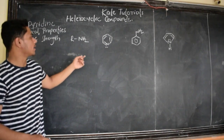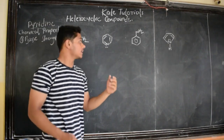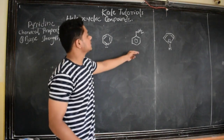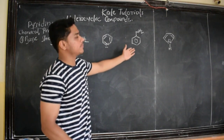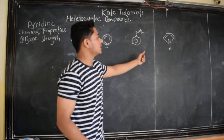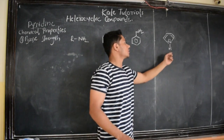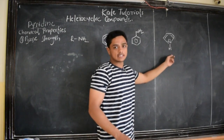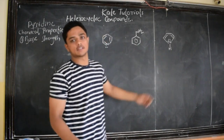Here we have four compounds. This first one is an amine — a primary amine. This second one is pyridine. This third one is aniline — also a primary amine but aromatic. And this last one is pyrrole, which we have discussed earlier.